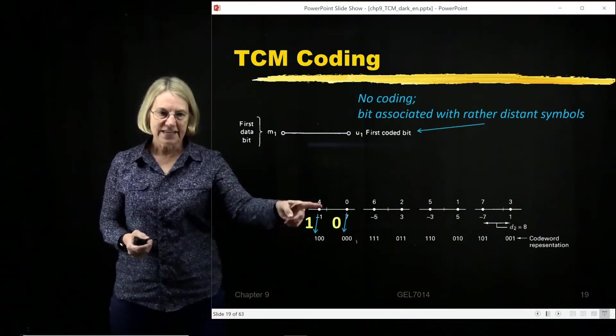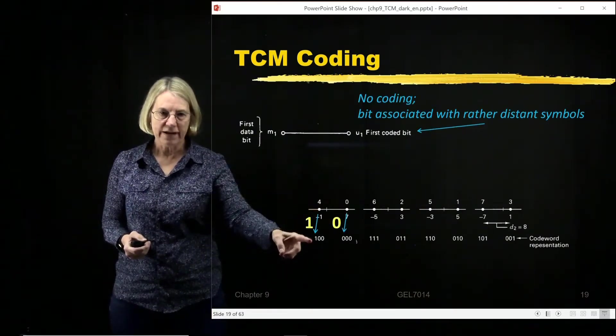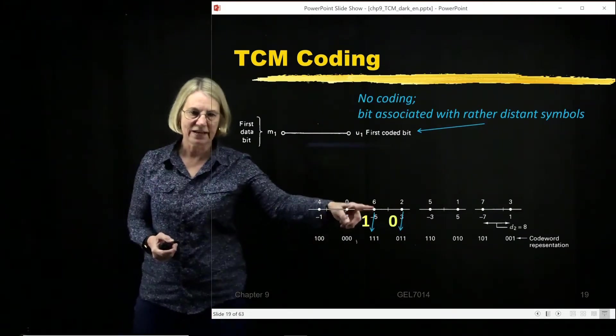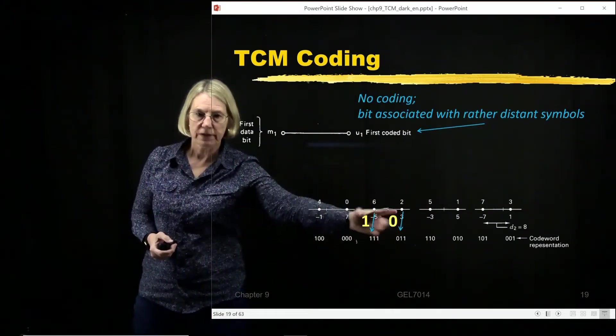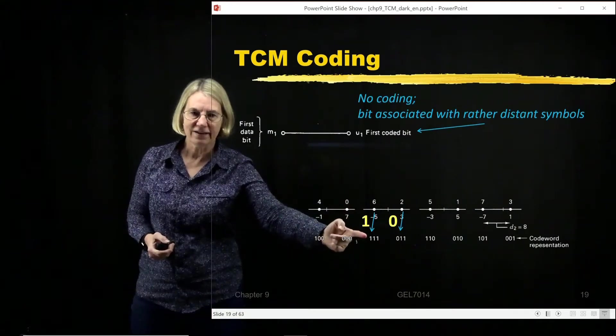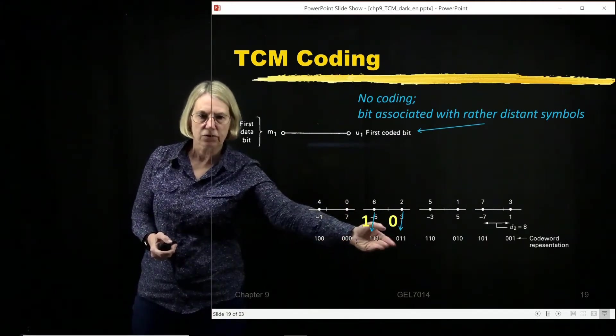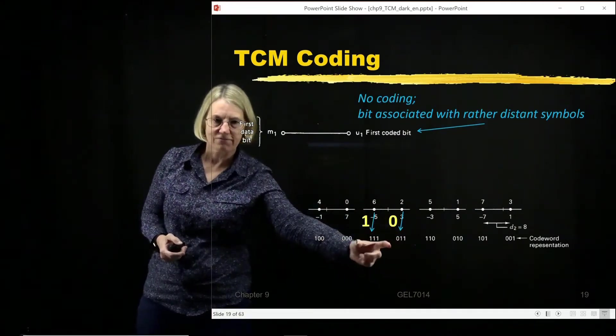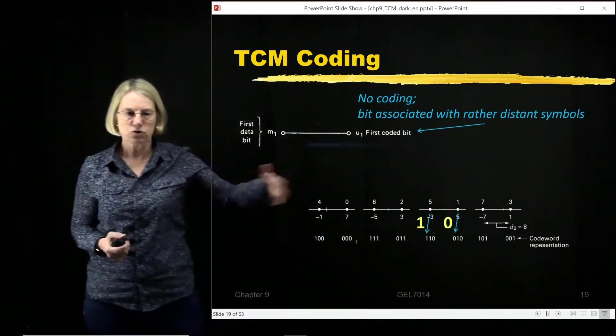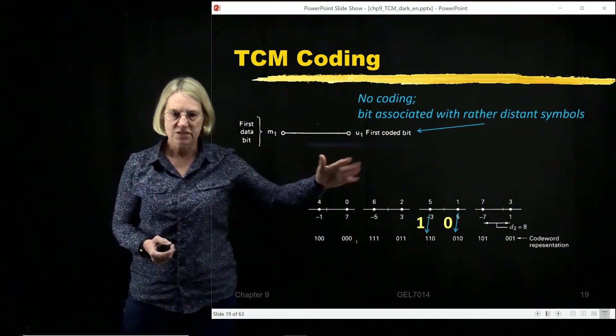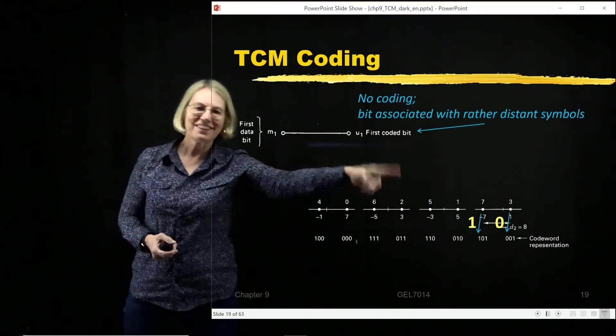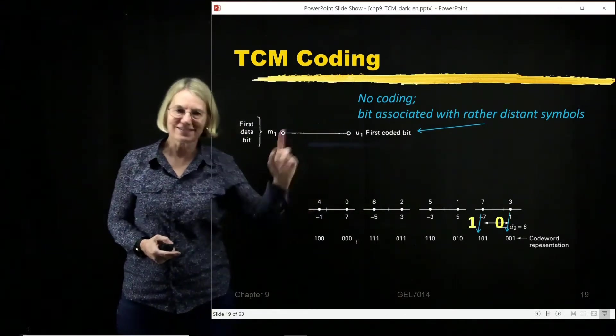So notice here that this 4, that's that 1 here in the first bit, the 0 in the first bit. Here again in this group, one of them becomes the 1 in the first bit. Even though the second and third bits are the same here, the first bits are different. And that's true for each one of them. So this is where I'm showing the bit that is not coded. It's that bit.